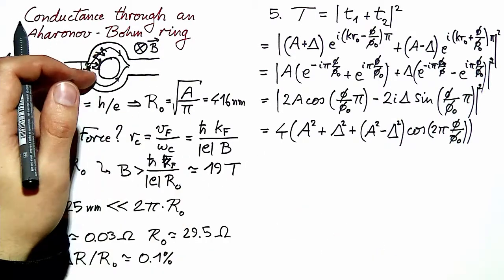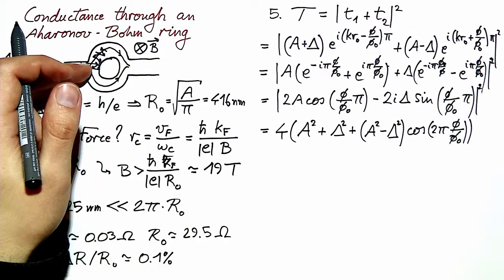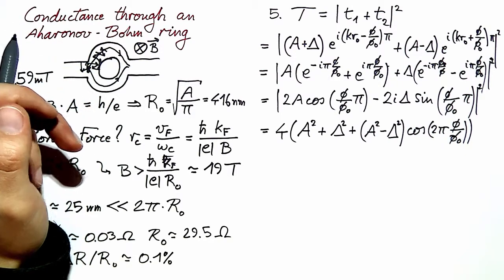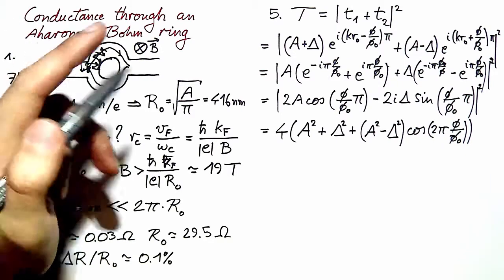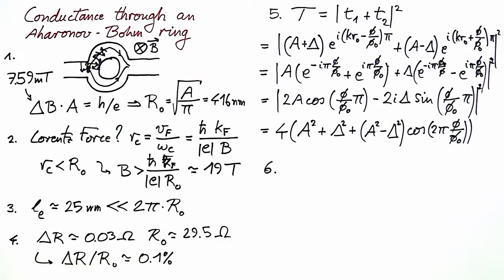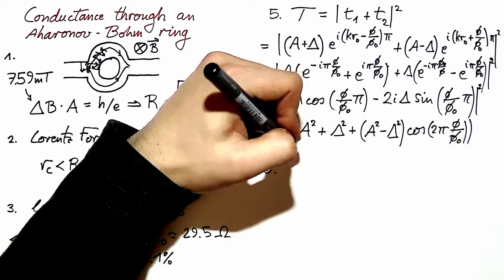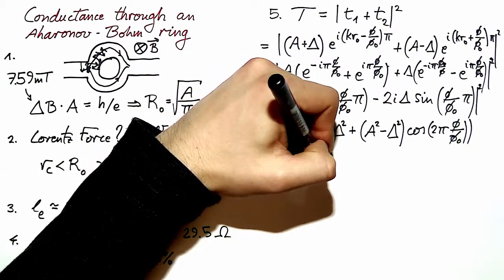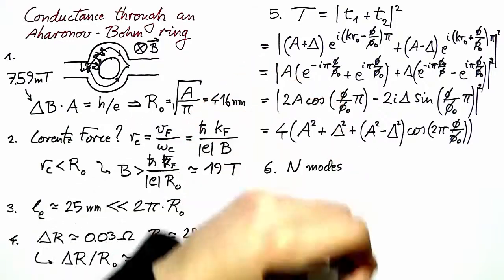If we make partition unequal by increasing Δ, this modulation will have a decreased amplitude, so we learn that unequal partitioning of the partial waves will reduce the Aharonov-Bohm oscillations that we observe.